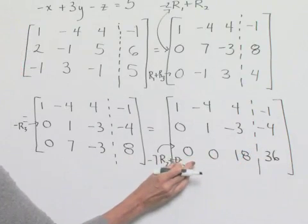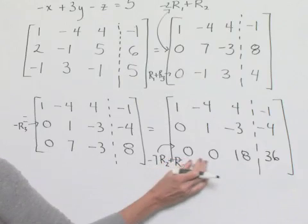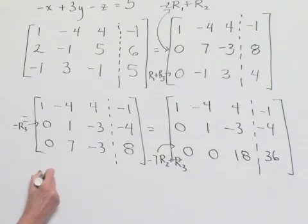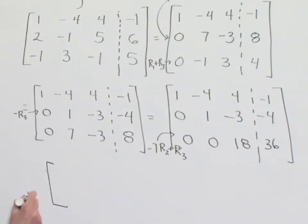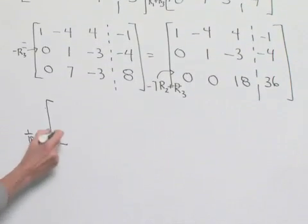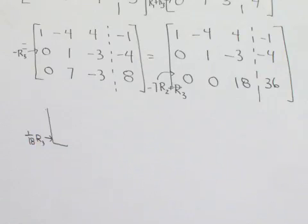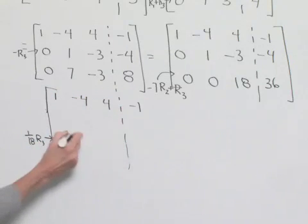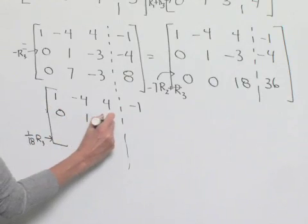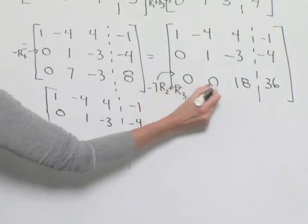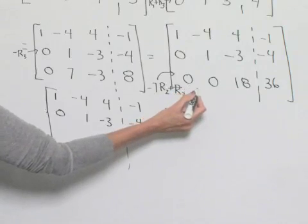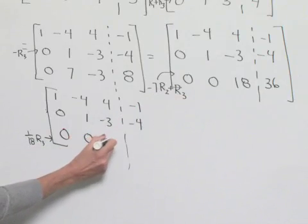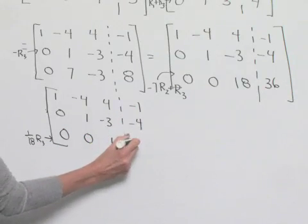Now we're going to get our row-reduced format. We can divide everything in the last row by 18 — that is, multiply by one-eighteenth. So the matrix becomes: row 1 is 1, negative 4, 4, negative 1; row 2 is 0, 1, negative 3, negative 4; and row 3 is 0, 0, 1, 2 (since 18 divided by 18 is 1 and 36 divided by 18 is 2).